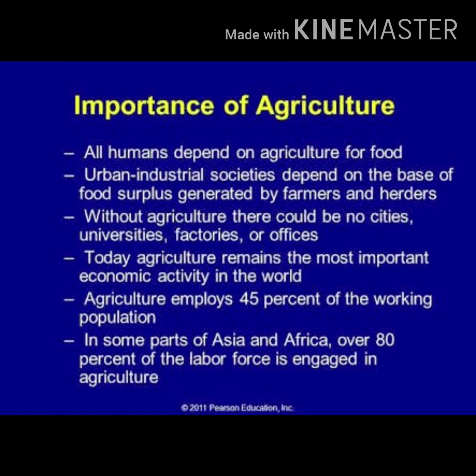Different crops require different temperatures and rainfall during their growing period. Soil requirements also differ from crop to crop — for example, wheat is mostly grown in alluvial soil whereas cotton needs water-retentive black soil. Different crops also require different lengths of growing season; for example, cotton needs 200 days, so it cannot be grown in a British climate where oats can be grown in the northern part.